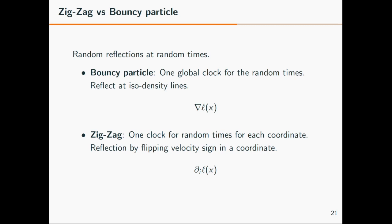We have two different ways of generalizing what we've seen in one dimension into multiple dimensions. The choice is whether to have one global clock taking care of reflection and reflecting at isodensity lines—that was the bouncy particle sampler. The other choice was the zigzag where we have a clock for each coordinate. Then we decide whether we reflect by flipping the velocity sign in the coordinate which first has a reflection event. In one case it depends on the gradient of the log density, and in the other case it depends only on one coordinate, on the entry of the gradient, a partial derivative of the log density.